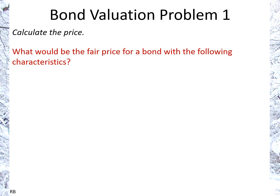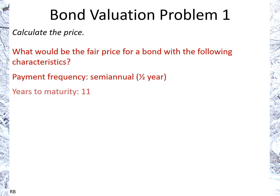Bond Valuation Problem 1: What would be the fair price for a bond with the following characteristics? Payment frequency: semiannual, meaning each half year. Years to maturity: 11 years. Coupon rate: 5.8%. Yield to maturity: 6.25%.